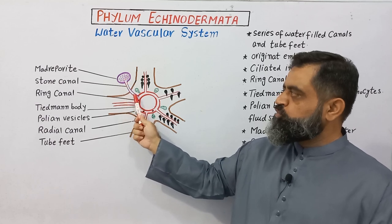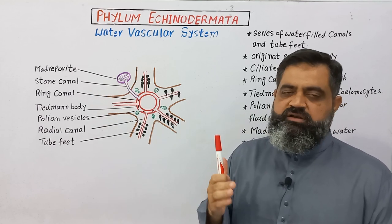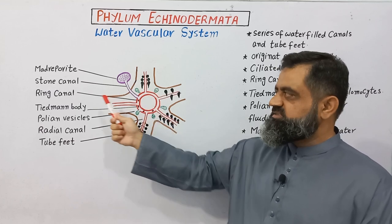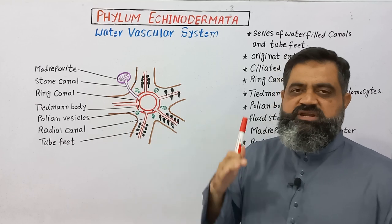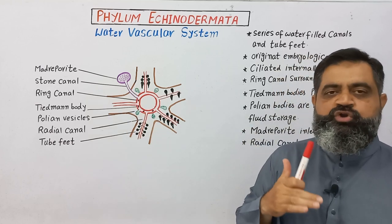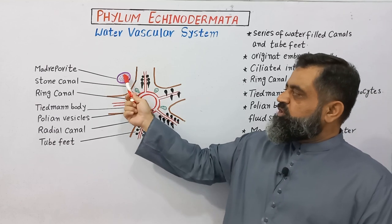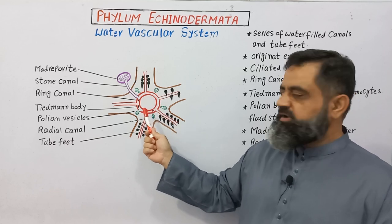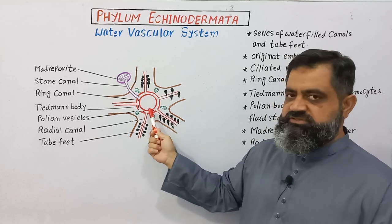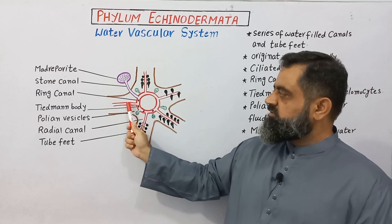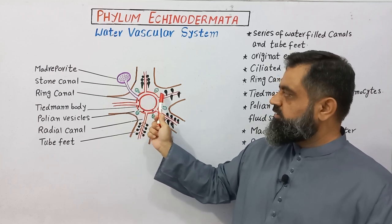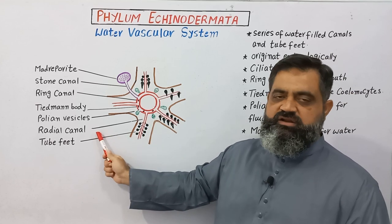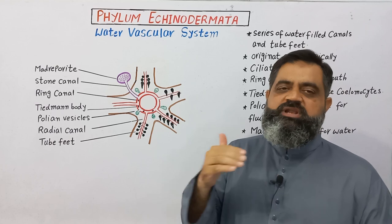This water then enters a tube-like structure known as the stone canal, which leads towards a ring of canal known as the ring canal, present in the center of the disc of the body of the sea star. Water from the madreporite passes through the stone canal and enters into the ring canal. The ring canal has extensions in each arm, and these extensions are called radial canals.